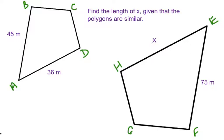So if we look at this problem, it says find the length of x given that the polygons are similar. We already know that these two are similar, and therefore we can solve.